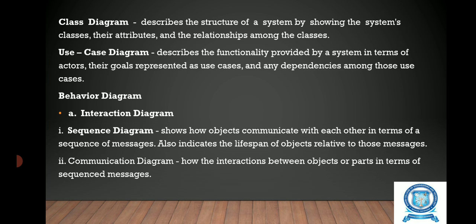The class diagram describes the structure of a system by showing the system's classes, their attributes, and the relationships among the classes. It displays individual classes, their attributes, and their relationships within the class diagram.